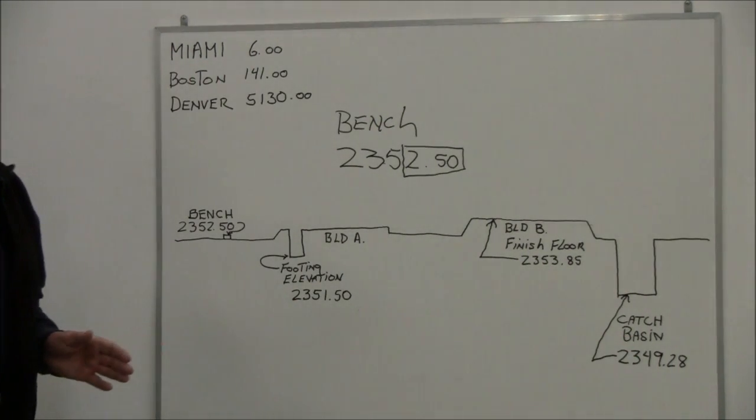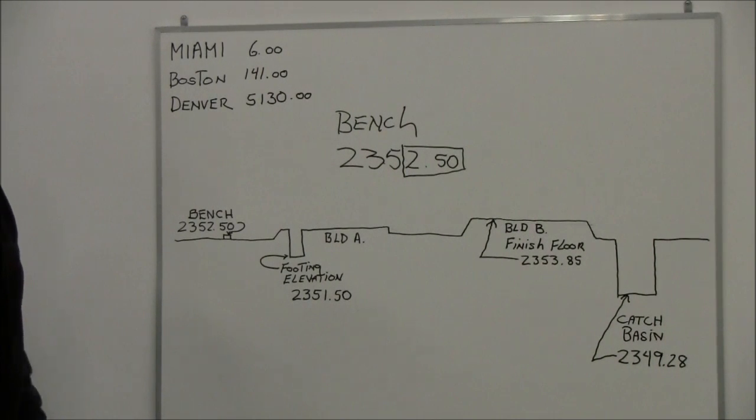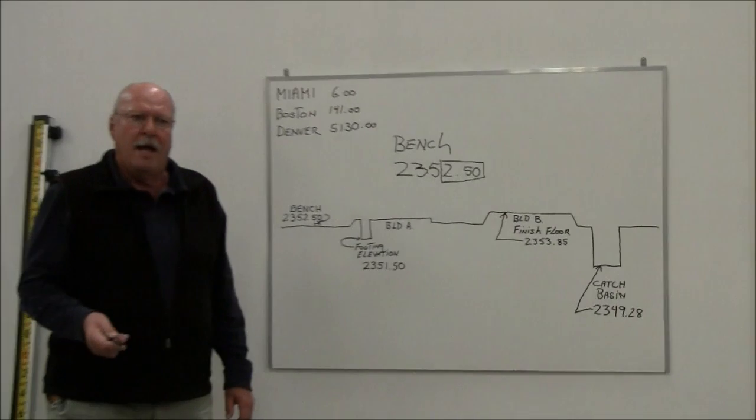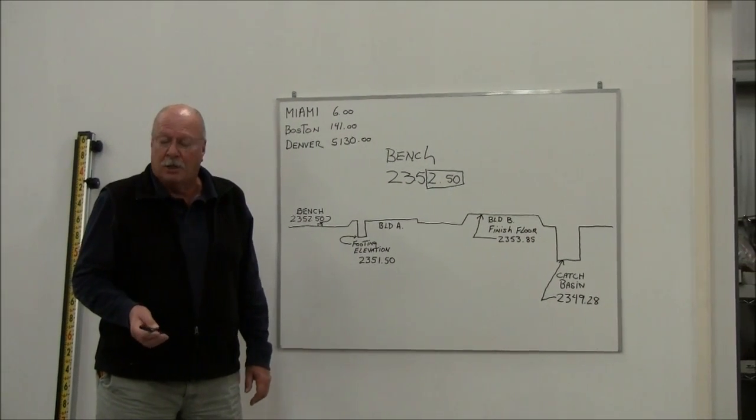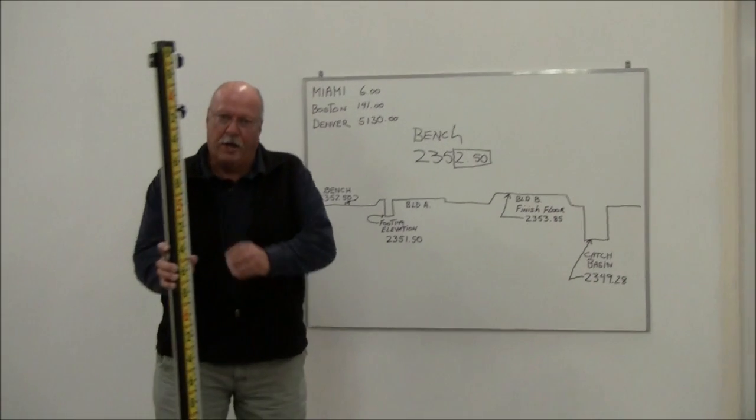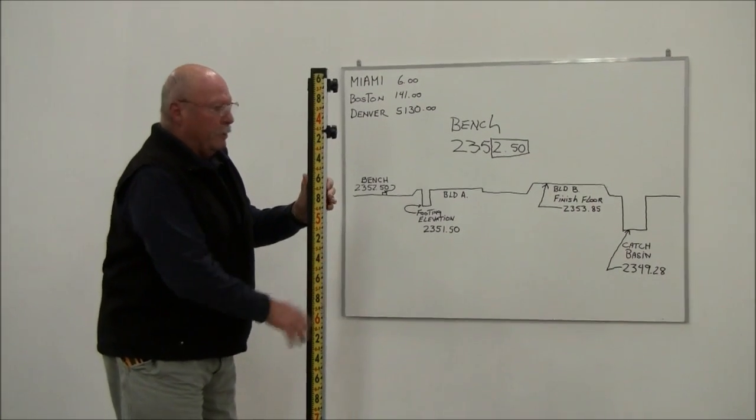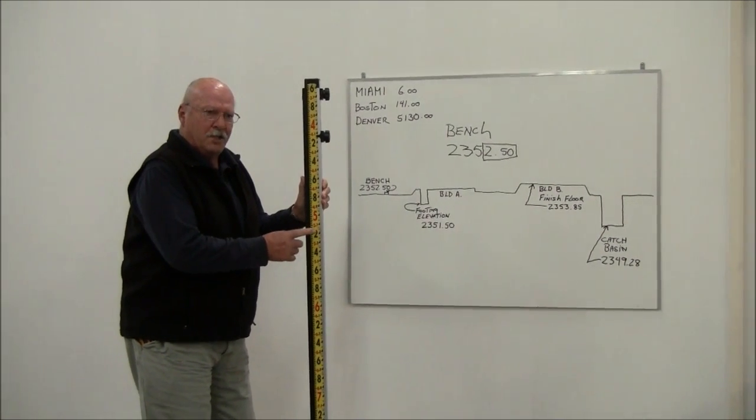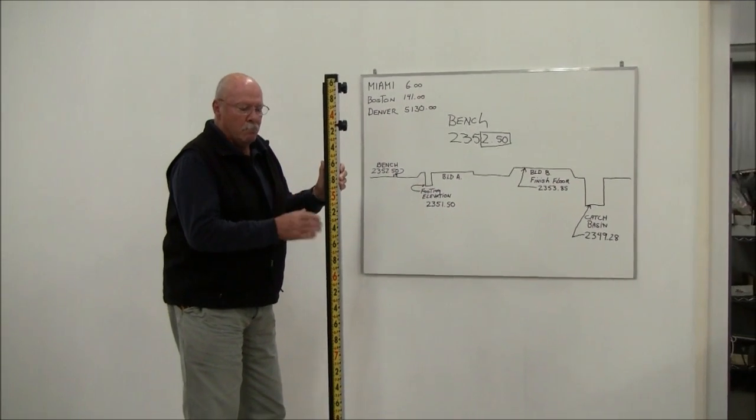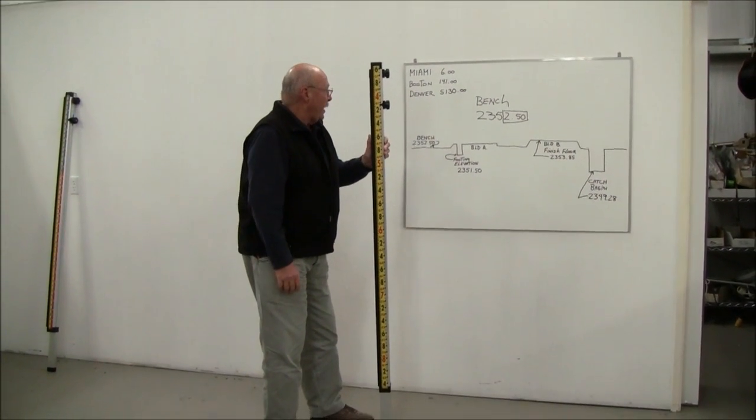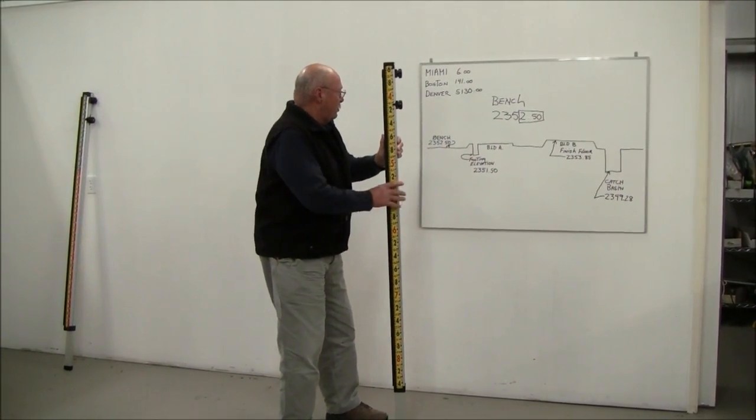What we're going to do is show you how the direct reading rod works and how simple it is. So this is a direct reading rod right here. We happen to make 16 different models. This is a 10-foot rod in feet, tenths, and hundredths. That's how many jobs are set up, probably most jobs.